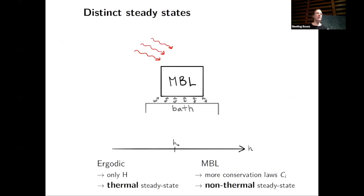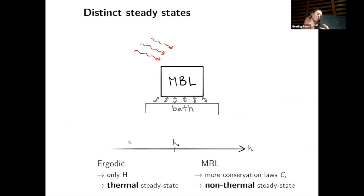What we find is a real game changer in such a setup of a disordered system coupled to a bath: applying a weak drive and looking at the steady state that is stabilized. On the ergodic side, the steady state that is stabilized is approximately thermal, while on the MBL side it is very non-thermal. This is a consequence of the fact that on the ergodic side there is only one approximate conservation law, while on the MBL side there are macroscopically many.